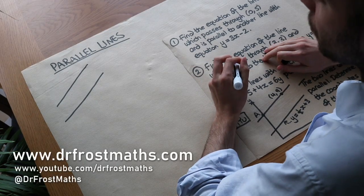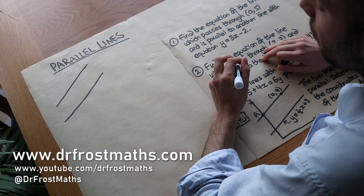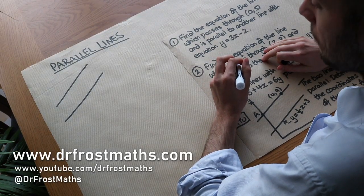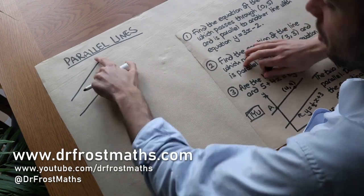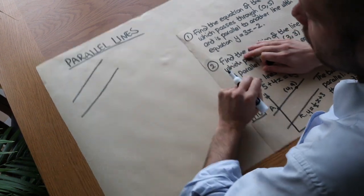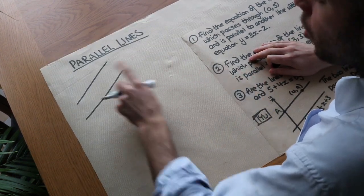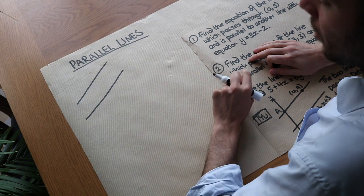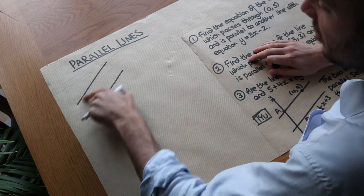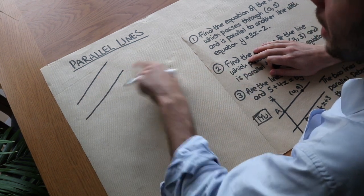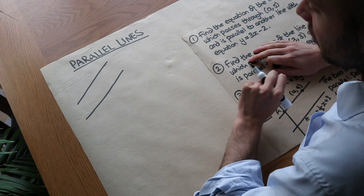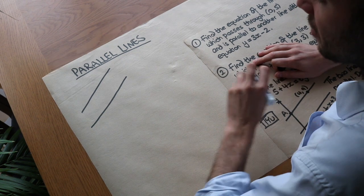Hello and welcome to this video on parallel lines and the relationship between them. We've got two parallel lines here. In terms of the equation of a straight line, what do they have in common? Well, they have the same steepness and therefore they must have the same gradient, because gradient just means steepness.